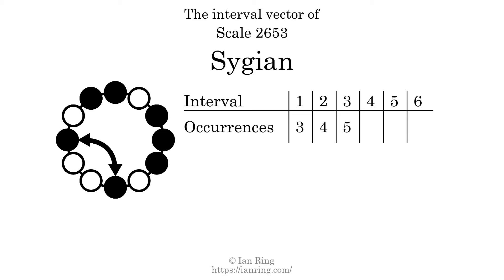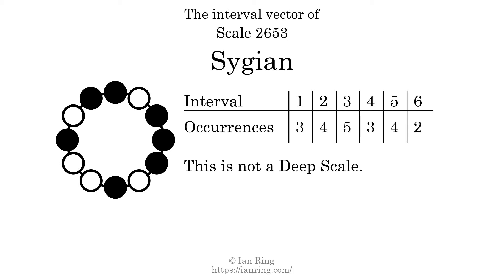There are three intervals with the size of four semitones. They are here, here, and here. There are four intervals with the size of five semitones. They are here, here, here, and here. There are two intervals with the size of six semitones. They are here and here. Each interval does not appear in this scale a unique number of times, so this is not a deep scale.